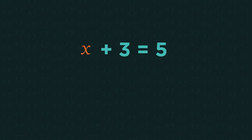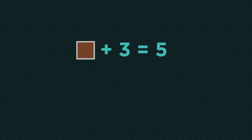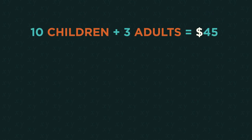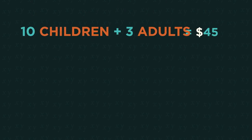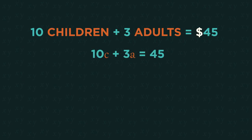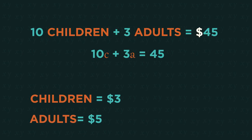In this video we're going to look at how we can solve equations using a method called inspection. Before we start, let's recap what an equation is and why we solve them. An equation is a mathematical sentence with two sides that are equal to each other. We solve equations to find the number or numbers that make the sentence true.